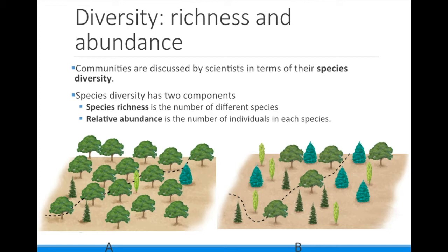Species richness is the total number of species, and relative abundance is the number of individuals of each species.